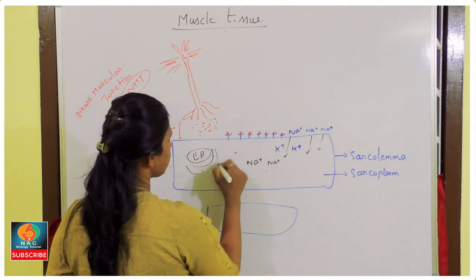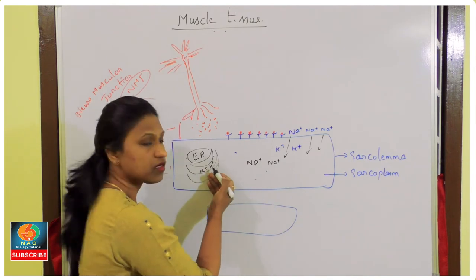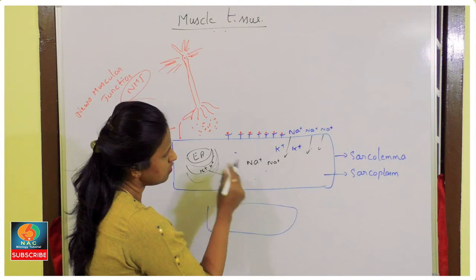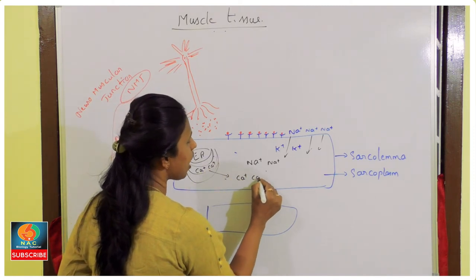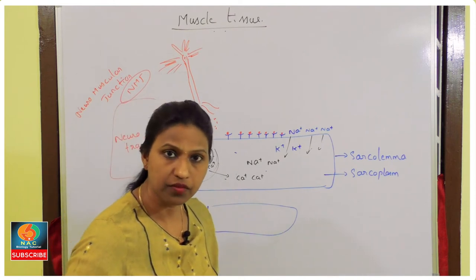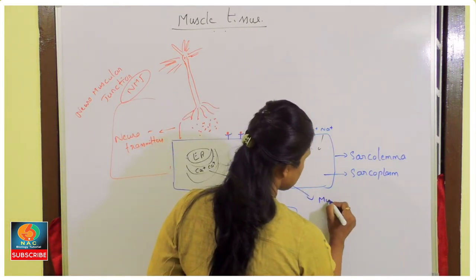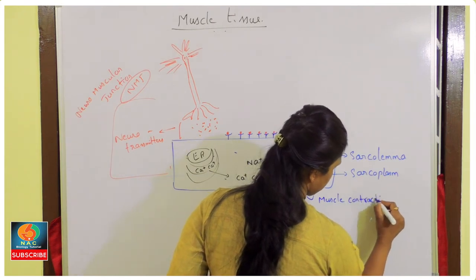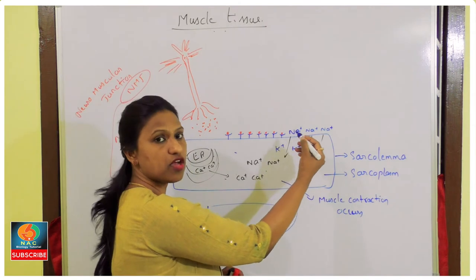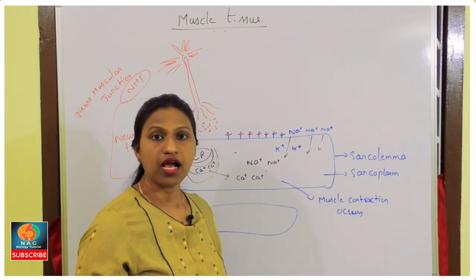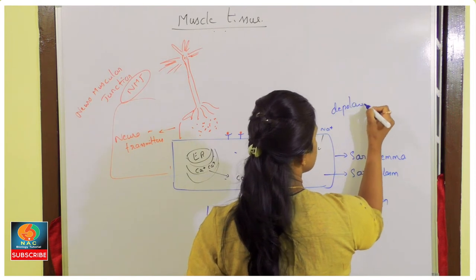The endoplasmic reticulum stores calcium ions (Ca2+). Once sodium enters, it signals the endoplasmic reticulum to release calcium, and this calcium release causes muscle contraction — the cell shortens. This influx of sodium triggering calcium release is the mechanism of depolarization.